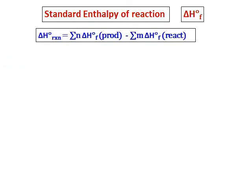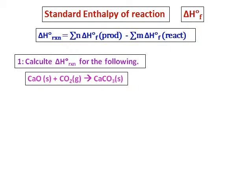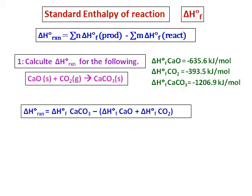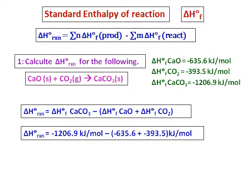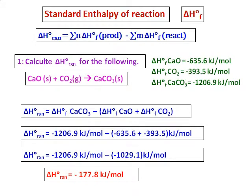Now let's calculate enthalpy of a reaction from enthalpies of formation. The definition is: enthalpy of reaction equals enthalpy of formation of the products minus enthalpy of formation of the reactants. For the reaction calcium oxide plus carbon dioxide giving calcium carbonate, the enthalpy of reaction equals the enthalpy of formation of calcium carbonate minus the sum of the enthalpies of formation of carbon dioxide and calcium oxide. Substitute all the given values to get the enthalpy of reaction.